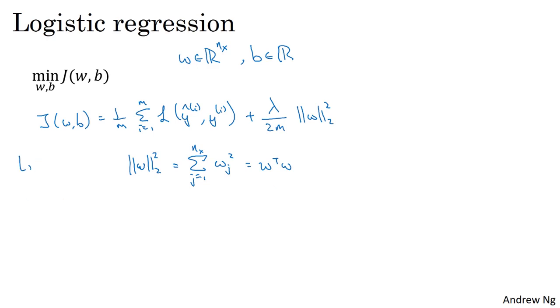And this is called L2 regularization, because here you're using the Euclidean norm, also called the L2 norm of the parameter vector w. Now, why do you regularize just the parameter w? Why don't we add something here about b as well? In practice you could do this, but I usually just omit this, because w is usually a pretty high dimensional parameter vector, especially with a high variance problem. Maybe w just has a lot of parameters, whereas b is just a single number, so almost all the parameters are in w rather than b.